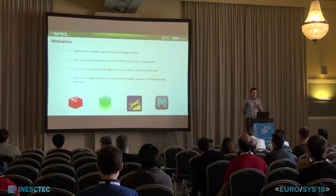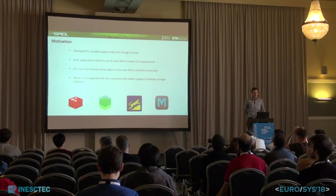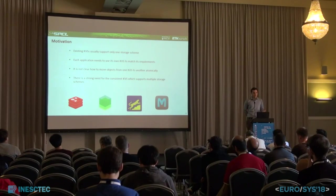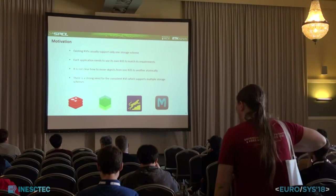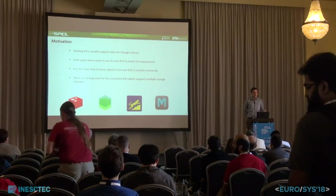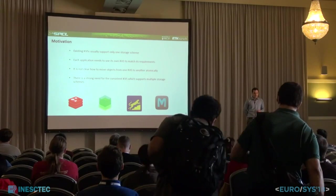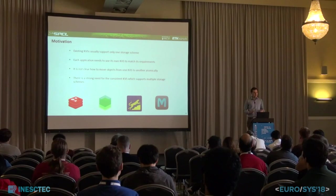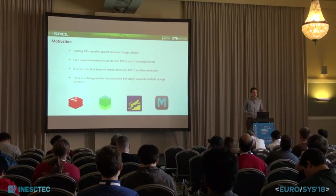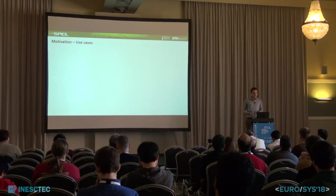The weakness of existing key-value stores is that they support only one fixed storage scheme. As a result, companies maintain dozens of distinct key-value stores which have to be maintained separately and may even have different APIs. This increases the complexity of deployment, and it is not even clear how you can move objects across key-value stores atomically. Clearly, there is a need for a key-value store that can support multiple storage schemes.